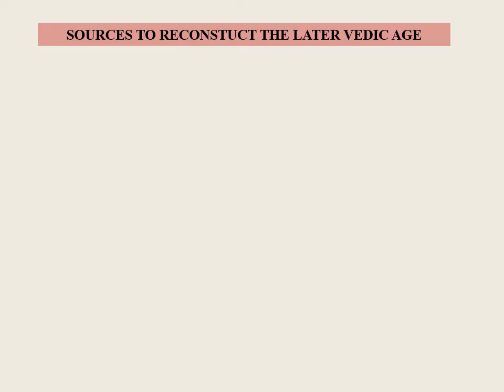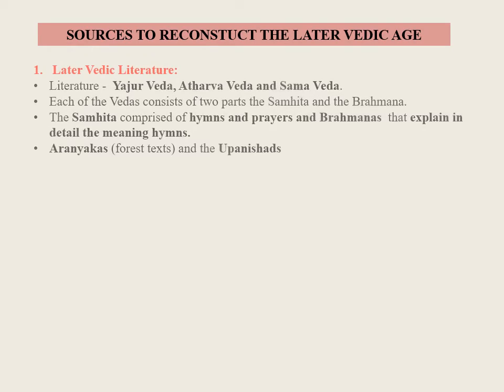Sources to Reconstruct the Later Vedic Age: The Later Vedic Literature included Yajurveda, Atharvaveda, and Samaveda. Each of the Vedas consists of two parts — the Samhita and Brahmana. The Samhita is comprised of hymns and prayers to be sung at rituals and sacrifices. The Brahmanas are prose texts that explain in detail the meaning of hymns.